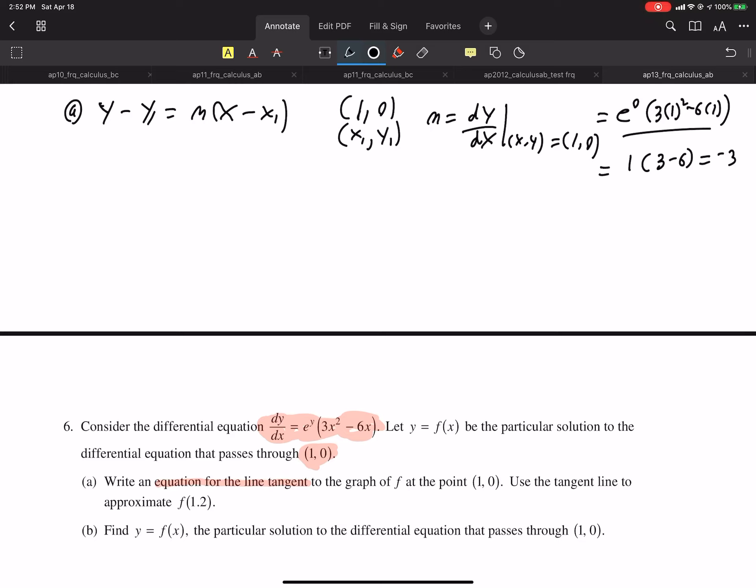Man, we are done with the first part of A. That's going to be y - 0 equals slope negative 3 times (x - 1). So y is negative 3(x - 1). So that is the equation of the tangent line. Let's continue reading the question.